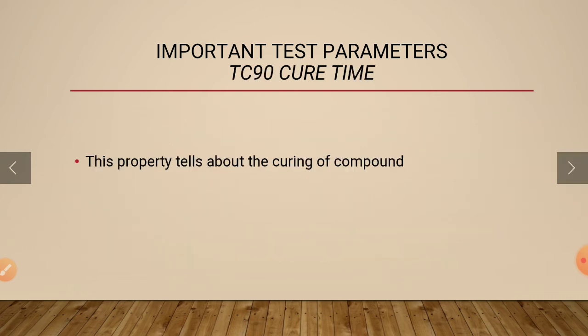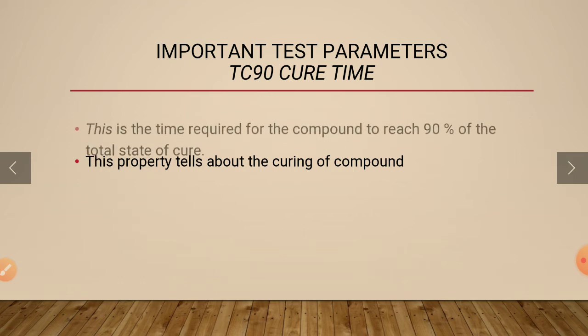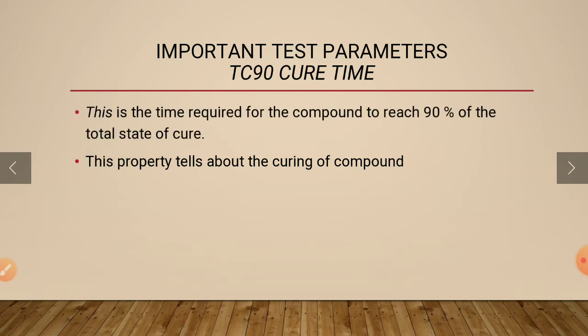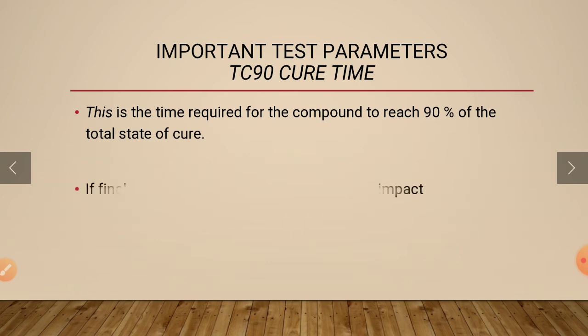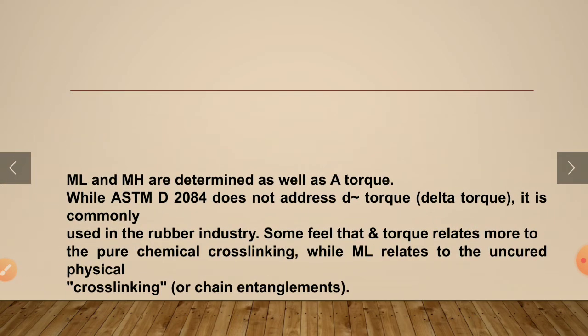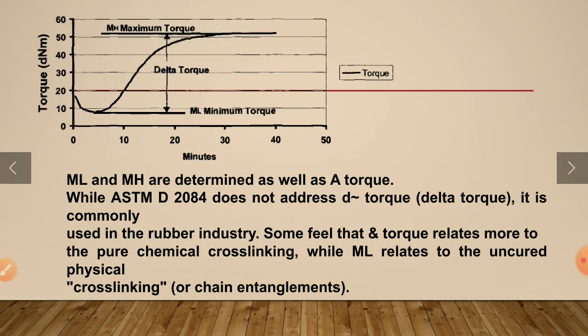If the TS2 property is found to be low, the temperature may affect the compound during milling before curing. TC90 tells about the curing parameters — generally 90% of the cure is taken as the consideration point, because most natural rubber compounds are prone to reversion.